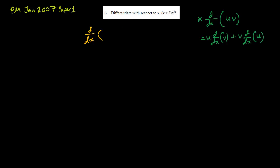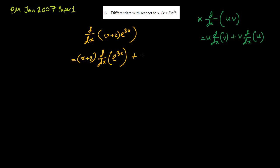So we have the expression (x + 2)e^(3x). We open the bracket and apply the product rule: u·d/dx(v) + v·d/dx(u), where u = (x + 2) and v = e^(3x). So it is (x + 2)·d/dx(e^(3x)) plus e^(3x)·d/dx(x + 2).